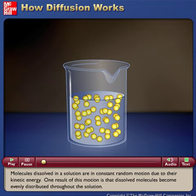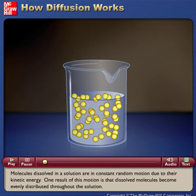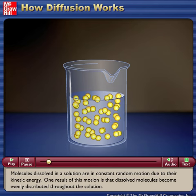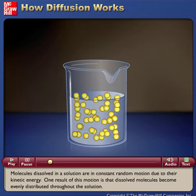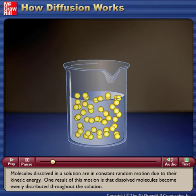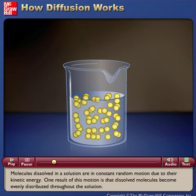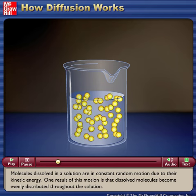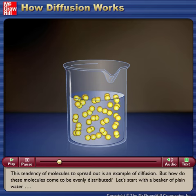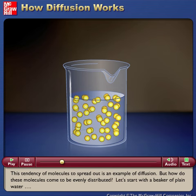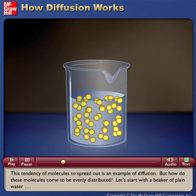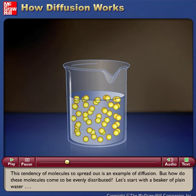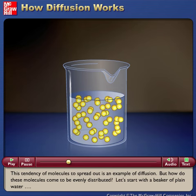Molecules dissolved in a solution are in constant random motion due to their kinetic energy. One result of this motion is that dissolved molecules become evenly distributed throughout the solution. This tendency of molecules to spread out is an example of diffusion. But how do these molecules come to be evenly distributed?